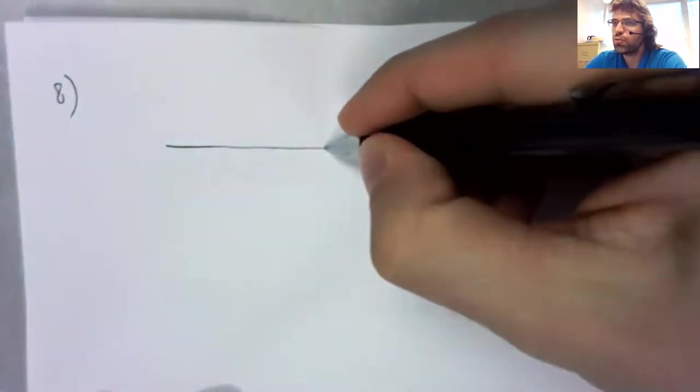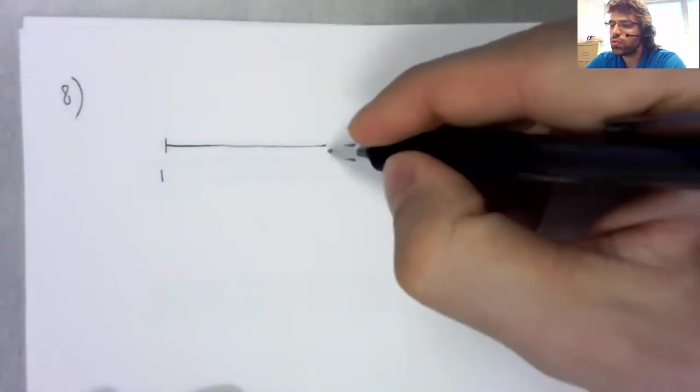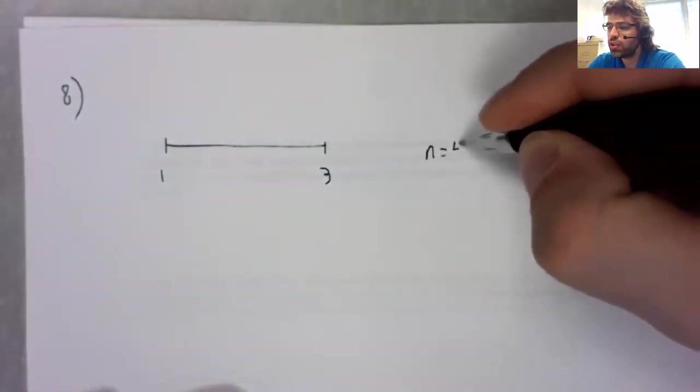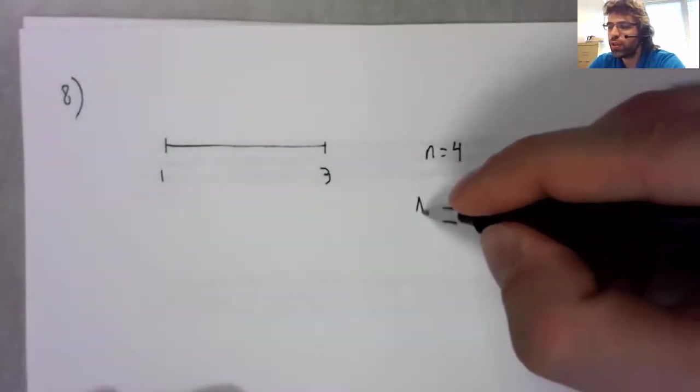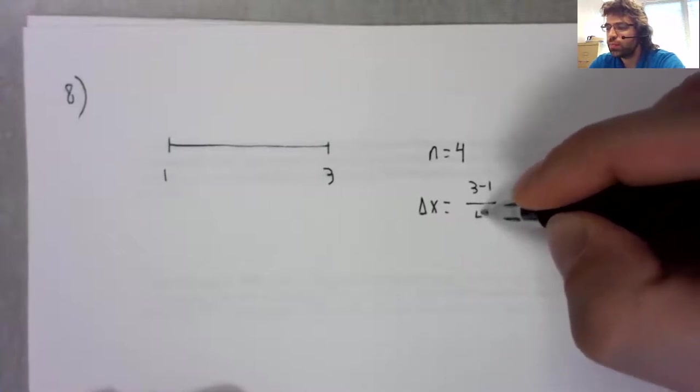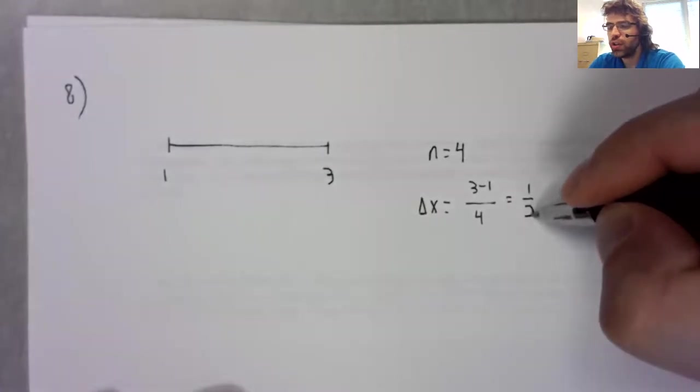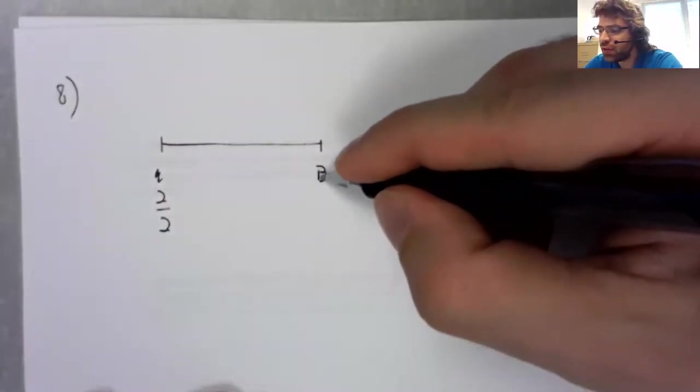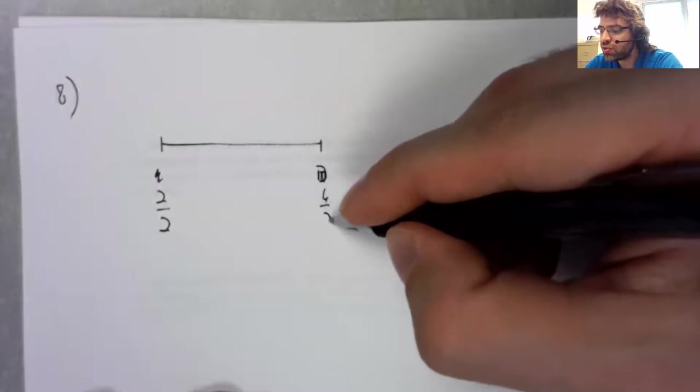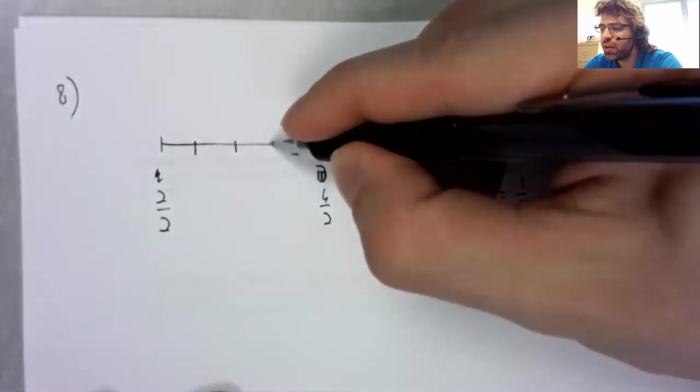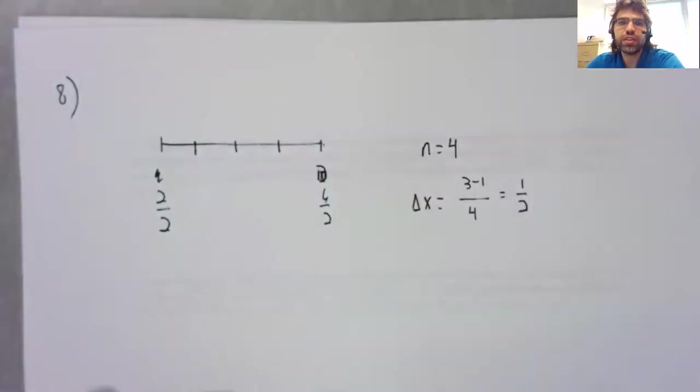Eight. Either you remember the trapezoidal rule or you don't really. We're going from one to three. We want n to be four. So the size of an interval is one half. So if we rewrite two as two halves and three as six halves, we've got three halves, four halves, five halves, six halves.